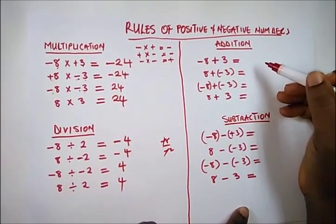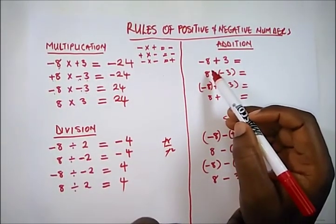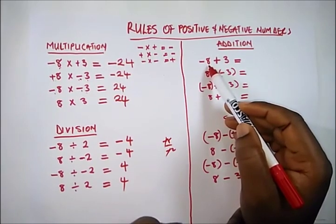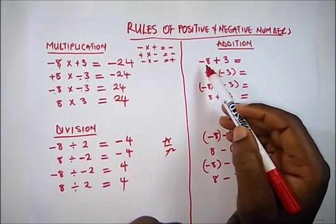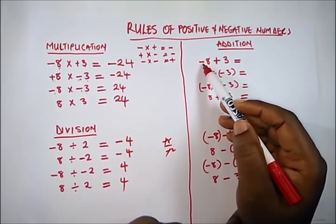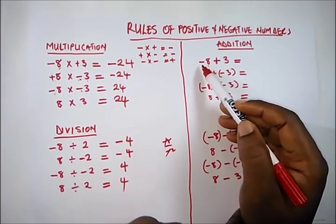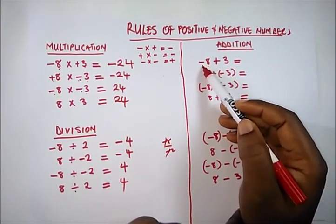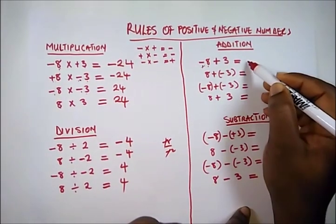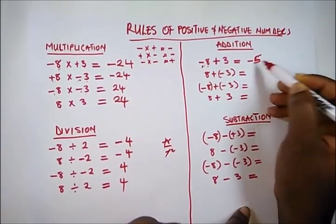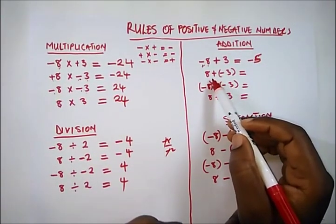Now we come to addition, which we have to understand well. First, check which is the biggest number — here it's 8. What sign is it carrying? It's carrying a negative sign, so we're going to perform a subtraction. Since the biggest number carries a negative sign, our answer will also be negative. So minus 8 plus 3 gives us minus 5.